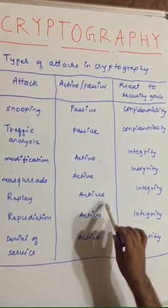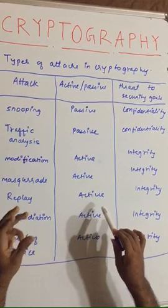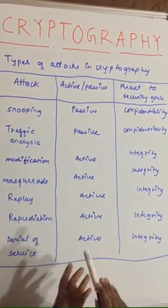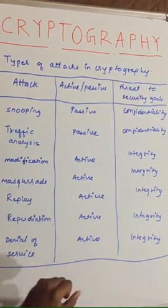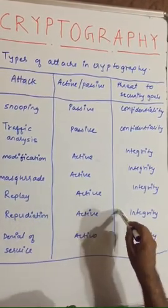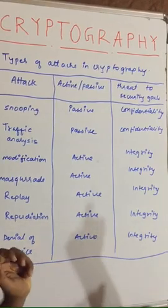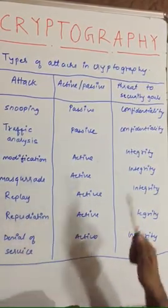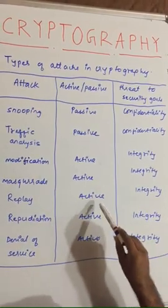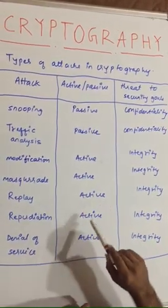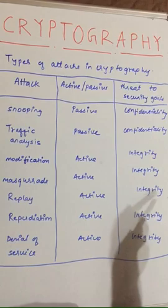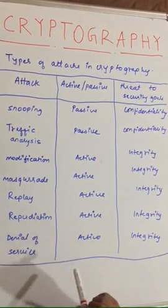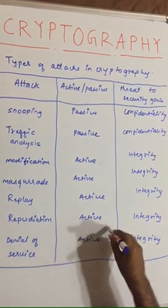Another attack is replay. In replay, while a sender is sending a message, the intruder fetches it from in between and keeps on repeating and throwing those messages to the receiver indefinitely — replaying the message again and again. This is also an active attack and a threat to the security goal of integrity.